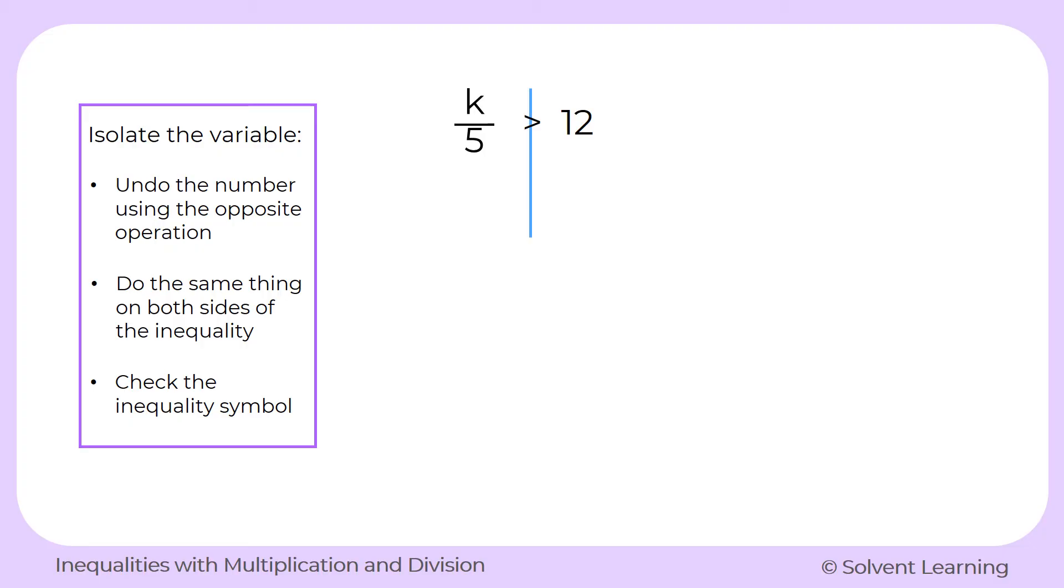So let's draw a line down through our inequality symbol and focus on the side that has the variable, which is the left side where we have the variable k. Remember, a fraction represents division. So k over 5 really represents k divided by 5.